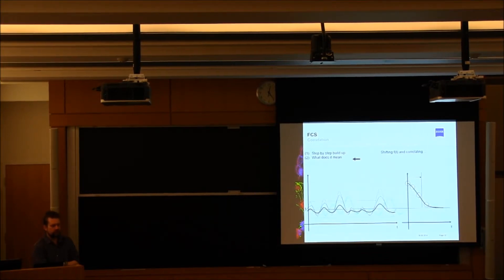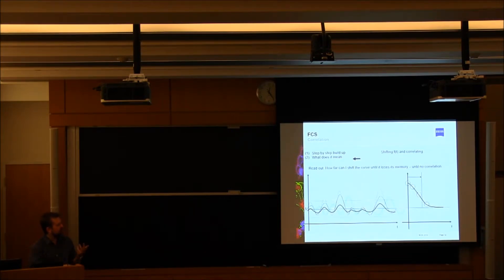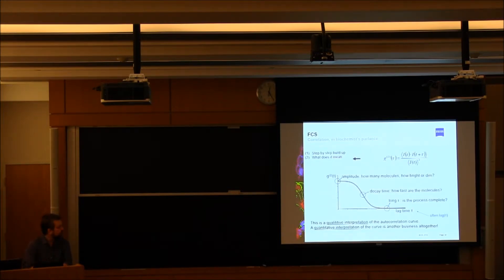It's this curve that we can use to calculate our diffusion coefficient. We know the volume of our illumination spot. We know G(0), which is related to 1 over N — the number of particles. So if we know the number of particles and the volume, we can calculate the concentration. And we know the decay time, so we can calculate our diffusion coefficient. The amplitude itself tells us how many molecules we have in our sample. The decay time tells us how fast the molecules are moving. And the long tail — the long time points — tells us when the process was complete.